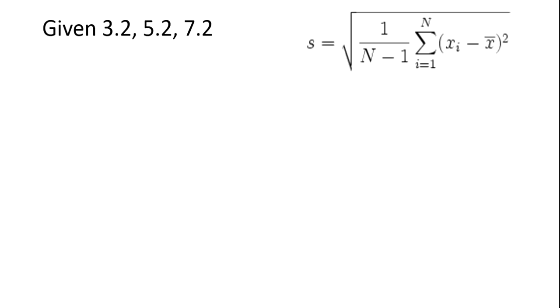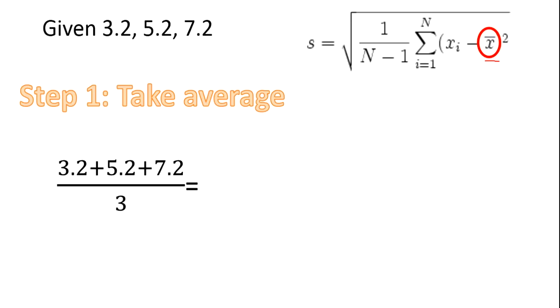In the first step, we take the average value, that is this value, or we also say that it is mean. For that we add it up. There are 3 measurements, so divide by 3, which will be giving 5.2.